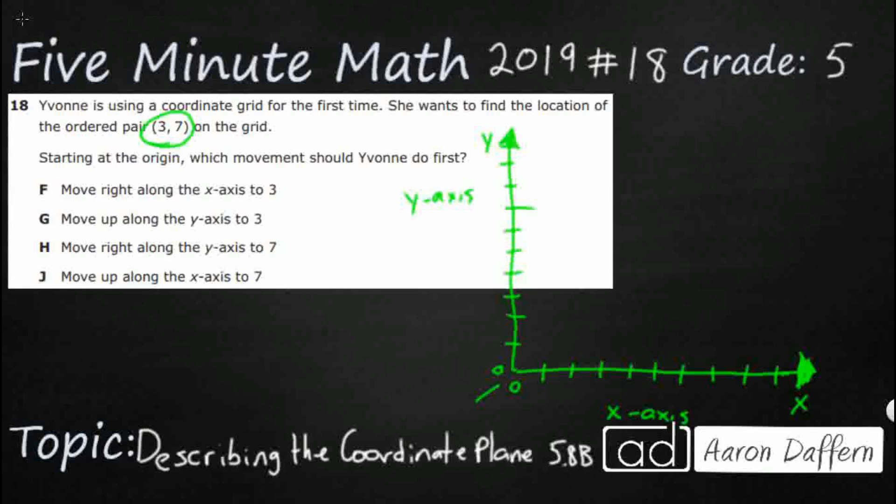Well let's begin here at our starting point because it says starting at the origin. The origin is where everything begins. That's our intersection of the x-axis and the y-axis. And it actually has a coordinate pair (0,0).